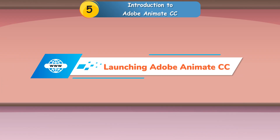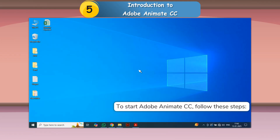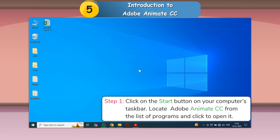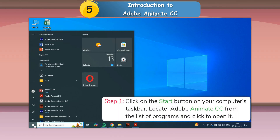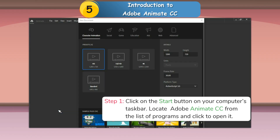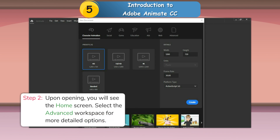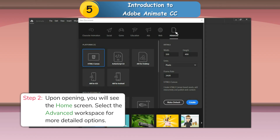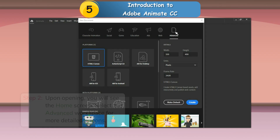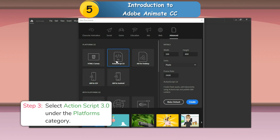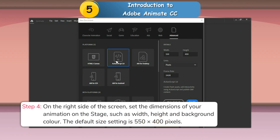Launching Adobe Animate CC. To start Adobe Animate CC, follow these steps. Step 1: Click on the Start button on your computer's taskbar, locate Adobe Animate CC from the list of programs and click to open it. Step 2: Upon opening, you will see the home screen. Select the Advanced Workspace for more detailed options. Step 3: Select ActionScript 3.0 under the Platforms category.